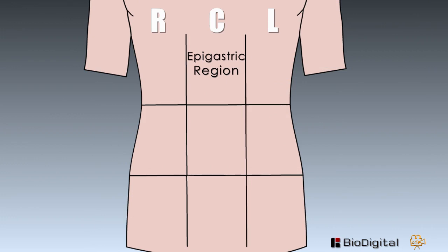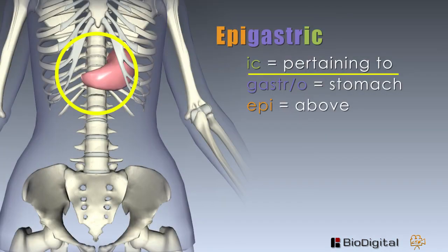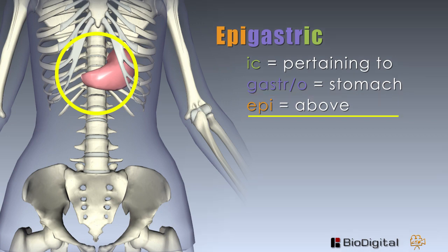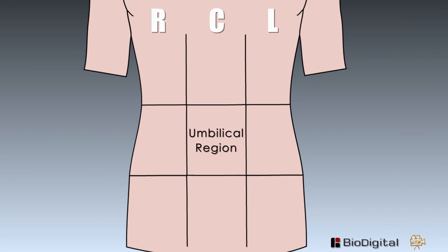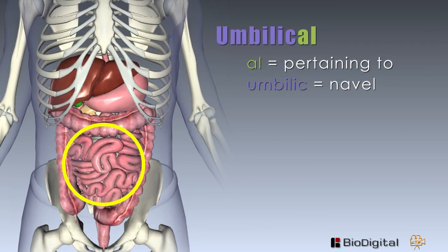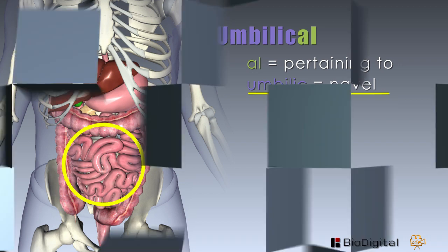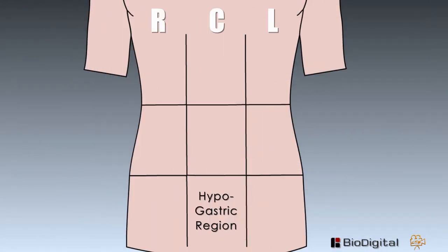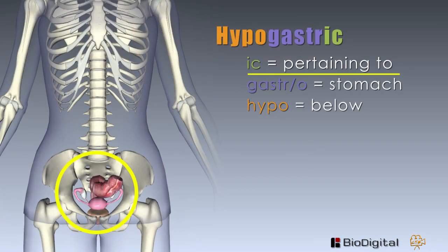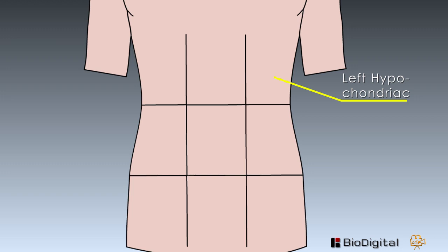Now the center section: the epigastric region is located above the stomach. -ic means pertaining to, gastro is the stomach, and epi means above. The umbilical region is centered upon the umbilicus or belly button, also called the navel. -al means pertaining to, and umbilic means navel. The hypogastric region is located below the stomach — ic is pertaining to, gastro again is stomach, and hypo is below.